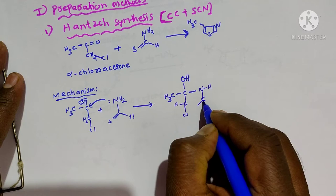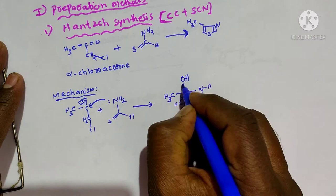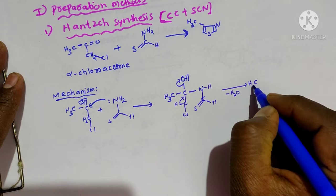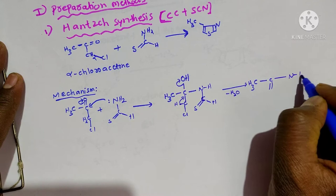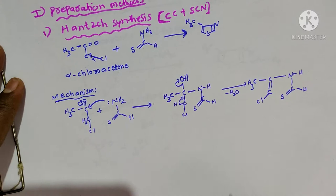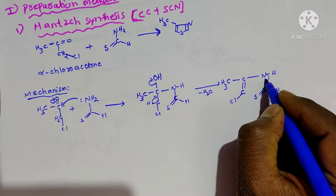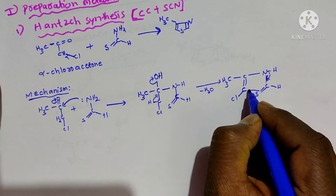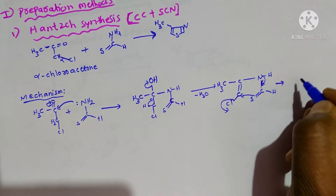Now water goes outside as H and OH. Here we are having Cl, and in the next step this NH bond breaks and the bonding electron pair shifts here, and this lone pair shifts over here. As a result the chlorine goes outside and we get a thiazole derivative.